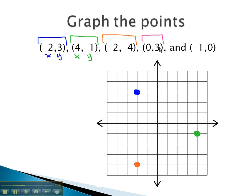Next is (0, 3). x is 0, y is 3. This means there's no left or right motion, just 3 up.